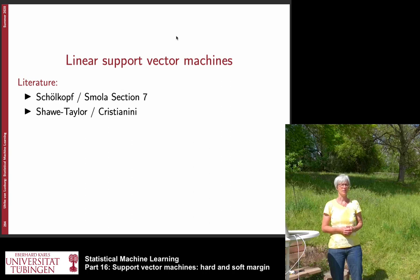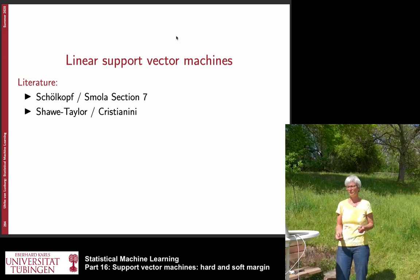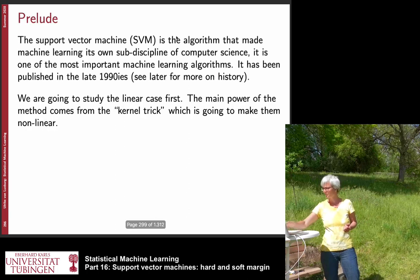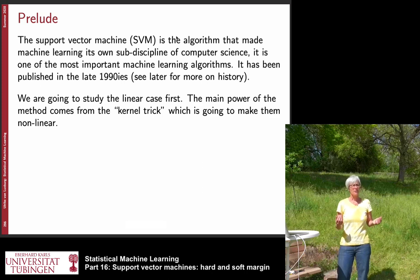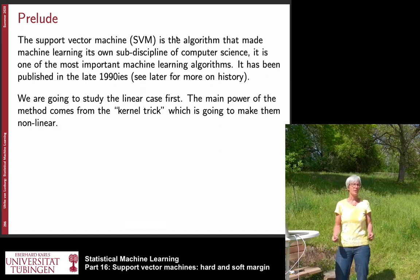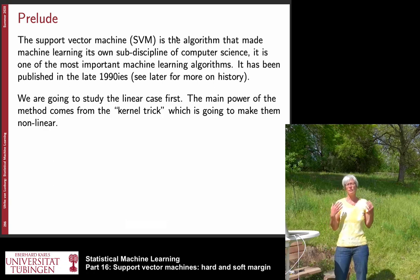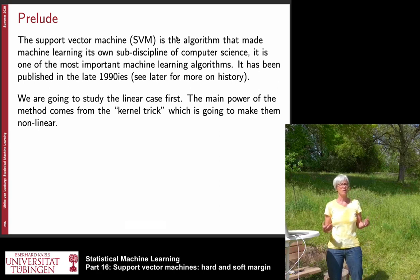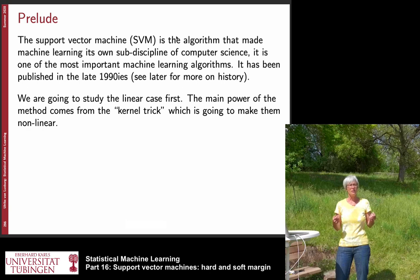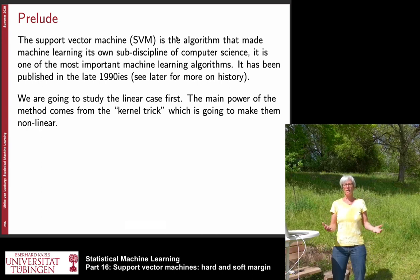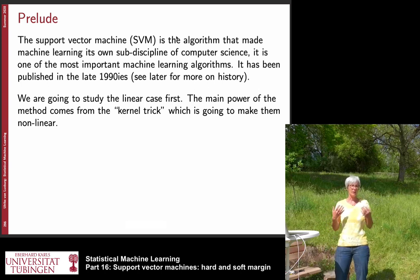Today we are going to discuss the support vector machine, which is one of the most prominent algorithms in traditional machine learning. We will start with the intuition and then derive the primal problem. The support vector machine was discovered in the 1990s and is the algorithm that made machine learning its own sub-discipline in computer science. We will cover the linear case of the hard margin support vector machine today.